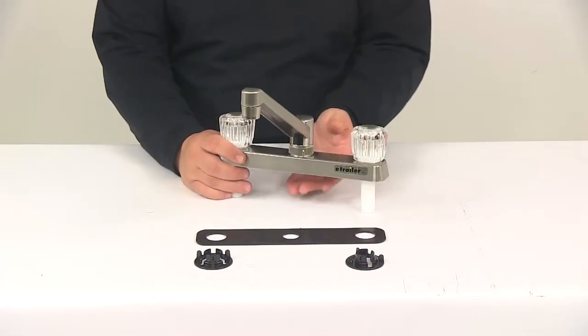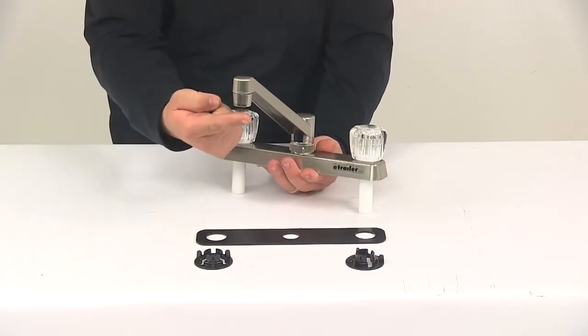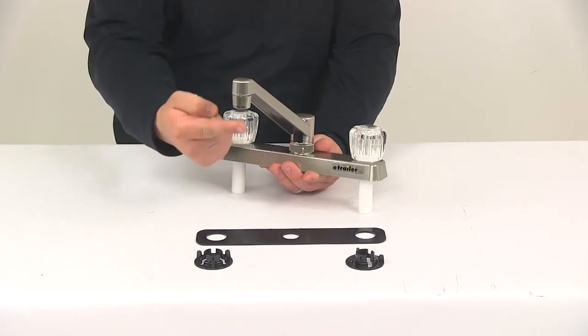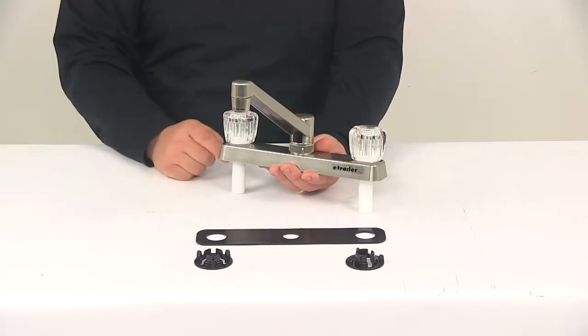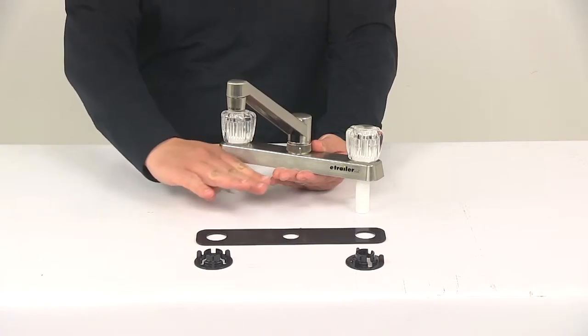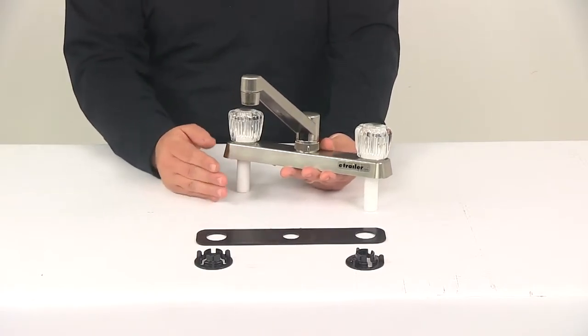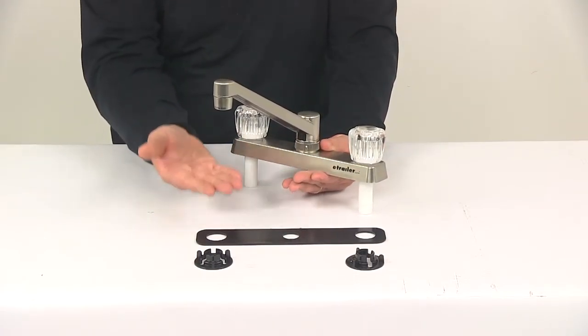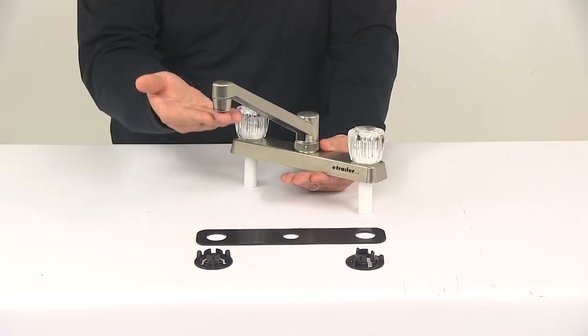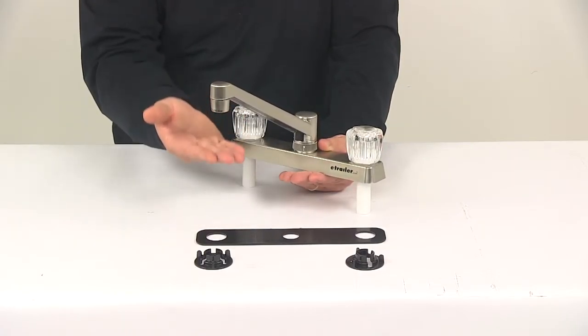Now I did take a measurement from the bottom of the mounting surface to the closest point of the faucet doing the straight line measurement and I got a measurement of about five inches. That would also be equivalent with the countertop height measurement. So if you measure from your countertop up to this faucet straight line, that's going to give you a clearance of about five inches.